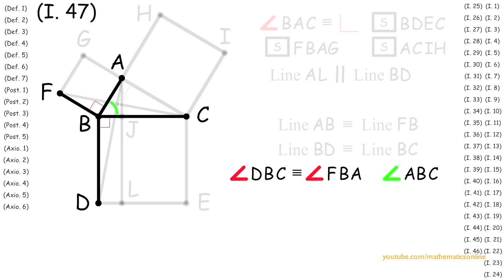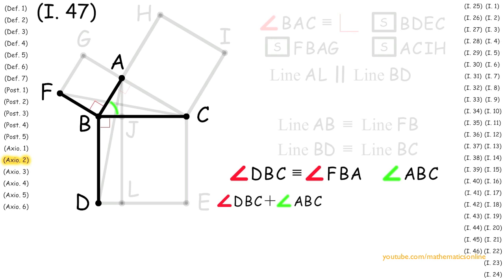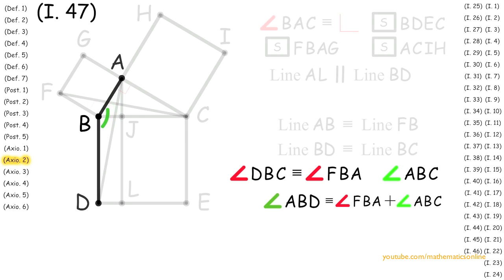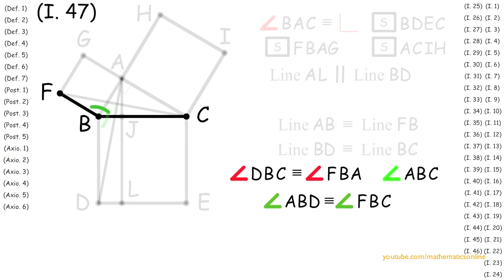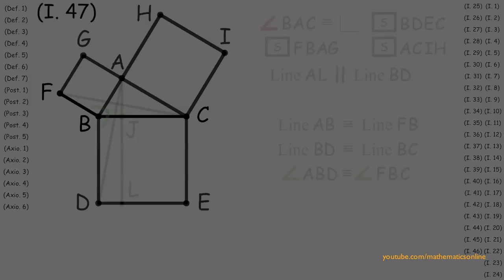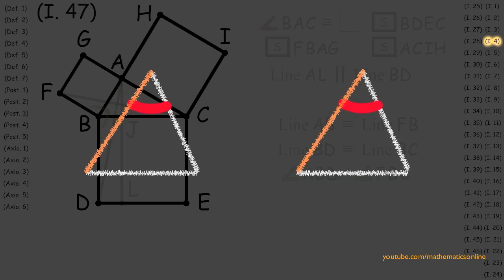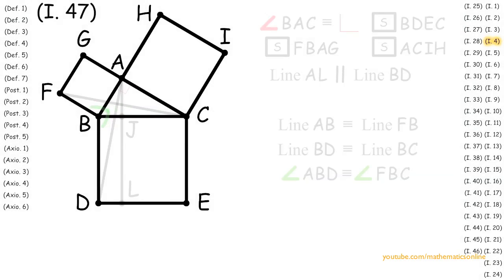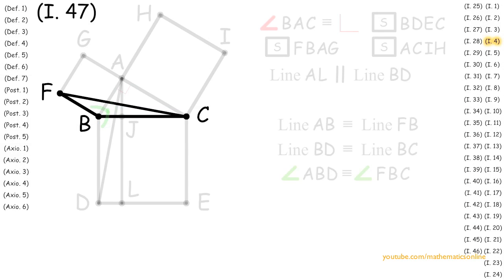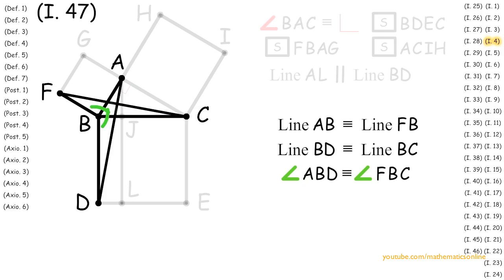Now with angle ABC, we apply Axiom 2 to attain that angle DBC plus angle ABC is congruent to angle FBA plus angle ABC. What this turns out to be is angle ABD is congruent to angle FBC. Now remember from Proposition 4, if two triangles share a corresponding side, angle, and side, then both triangles must be congruent. Looking at triangle ABD and triangle FBC, we can see that they both share a corresponding side, angle, and side. Therefore, triangle ABD must be congruent to triangle FBC.